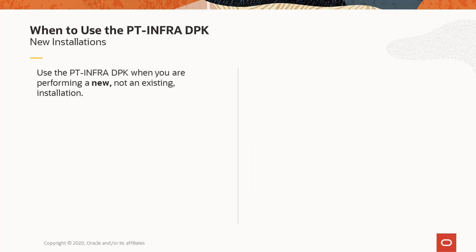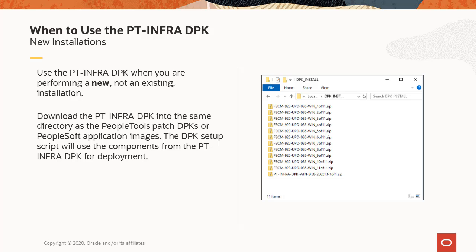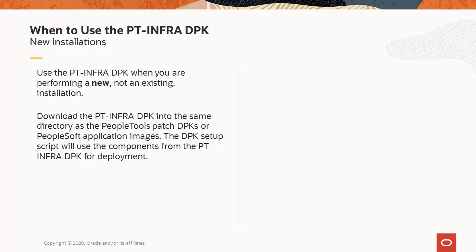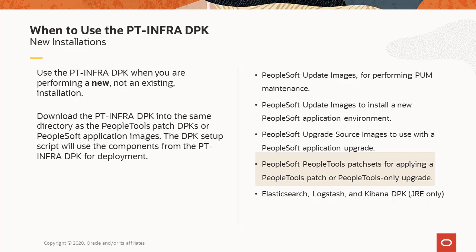You can use the PT-Infra-DPK only for new installations — you cannot use it to update components on an existing PeopleSoft environment. Download the PT-Infra-DPK into the same directory as the PeopleTools patch DPKs or PeopleSoft application images. The DPK setup script will use the components from the PT-Infra-DPK for deployment. Use the PT-Infra-DPK when performing a new installation of PeopleSoft update images, PeopleSoft upgrade source images, PeopleSoft PeopleTools patch sets, or the Elasticsearch, Logstash, and Kibana DPK. When used with the ELK DPK, it installs JRE only.